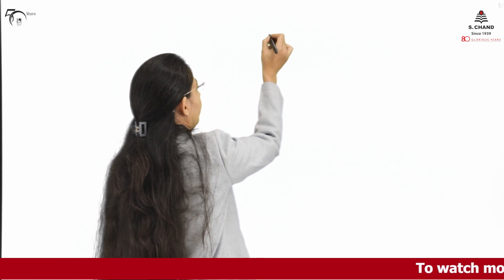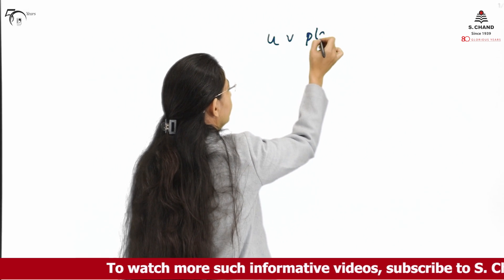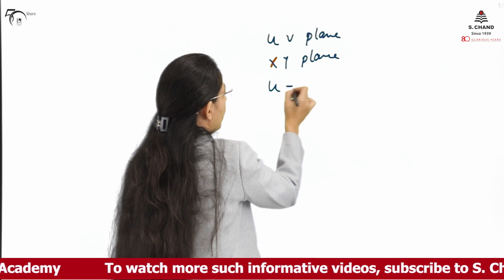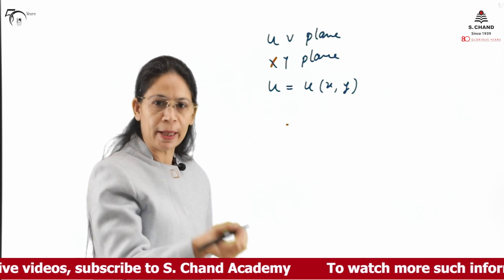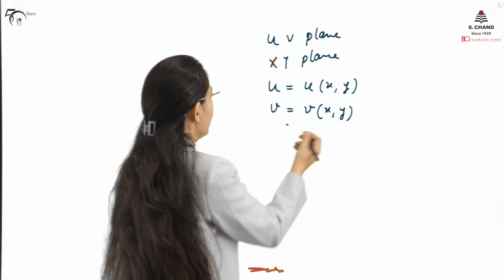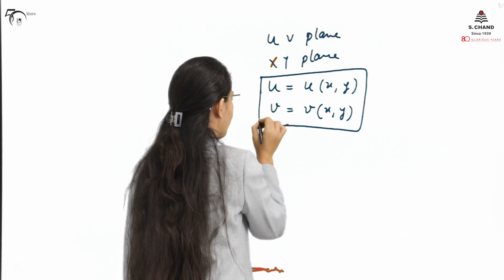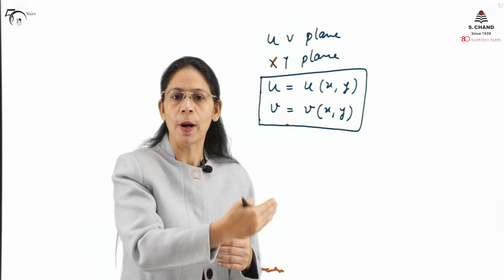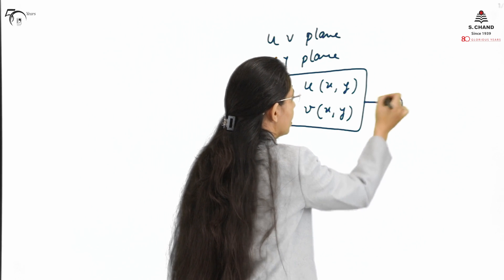Before we start with conformal mapping, we will give you a background for the transformation. Transformation is when we have a certain set of coordinates and we would like to transform that into another set of coordinates. Suppose we have the uv plane and we have another xy plane. If u and v can be transformed to the xy plane by the relation u and v as a function of xy, then this is called the transformation equation, which establishes a relation between the points in the uv plane and the points in the xy plane.